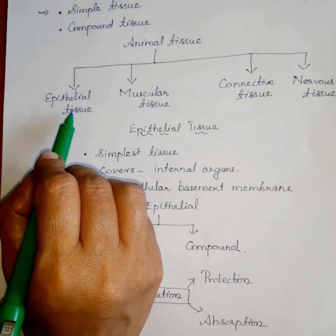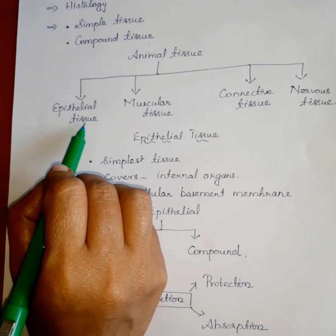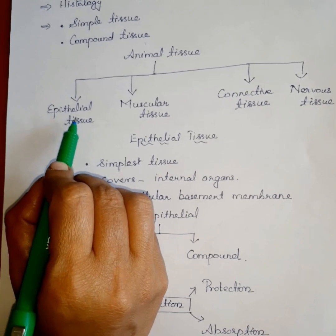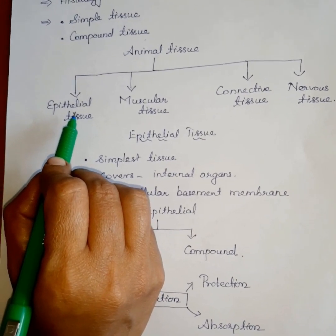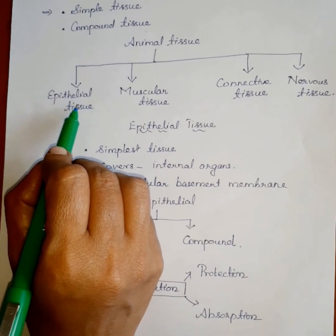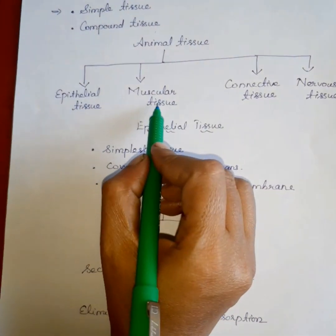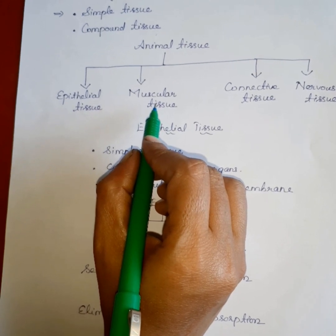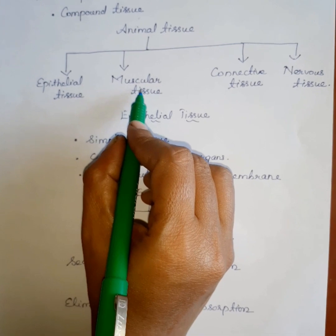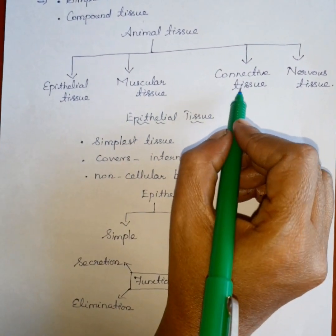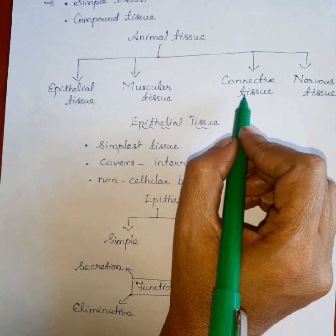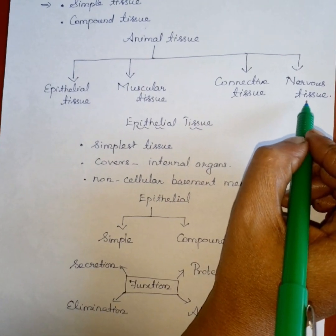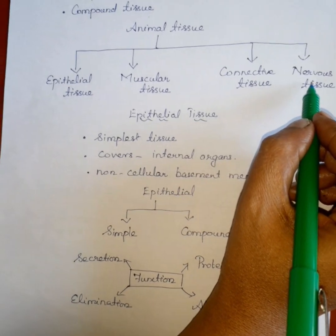Muscular tissue is elastic in nature and provides movement of the body. Connective tissue connects blood, bone and muscles together. Our brain is made up of nervous tissue.